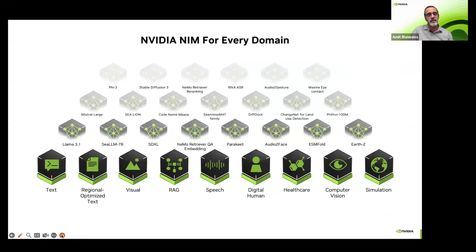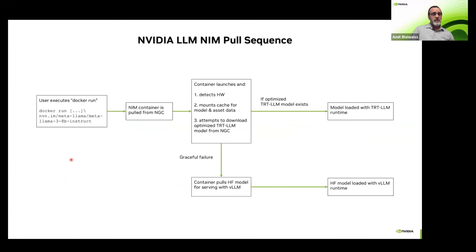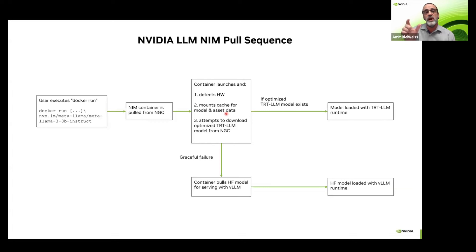NIMs are not limited to text — we have visual NIMs, embeddings, speech, and even healthcare. They all use the same mechanism as far as architecture. One of the handy things is that you can run this with a single Docker command. What we do is first pull the NIM container the first time you run the command. For example, running a Llama 3 8B instruct: we pull the container from our catalog, detect the hardware running on your machine, mount the cache and assets including any LoRA adapters, and then download the perfect fit for the specific hardware and model.